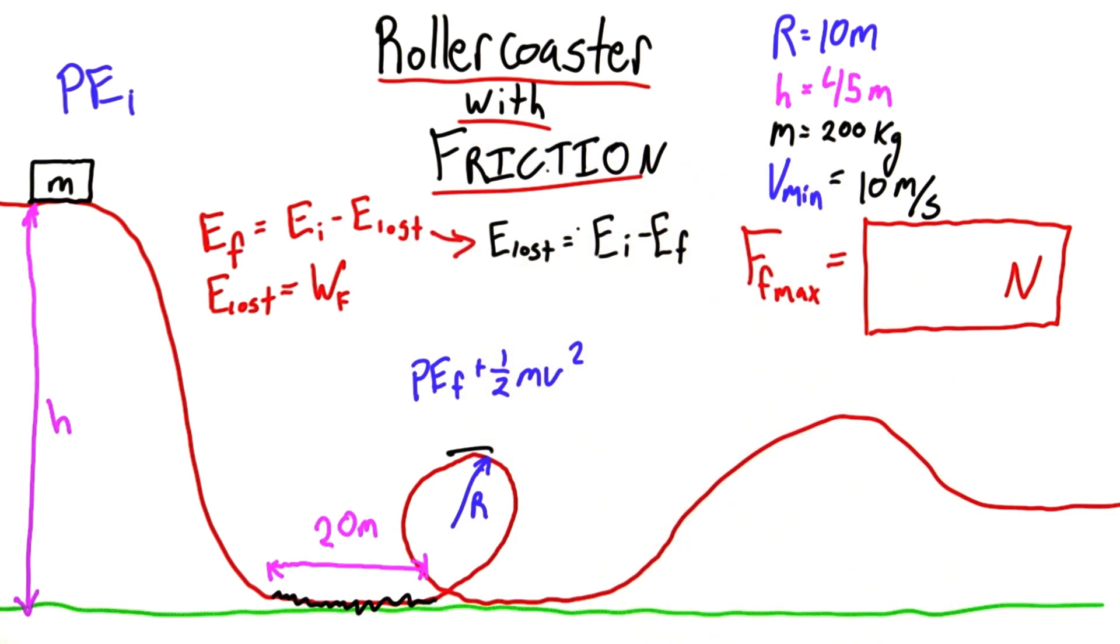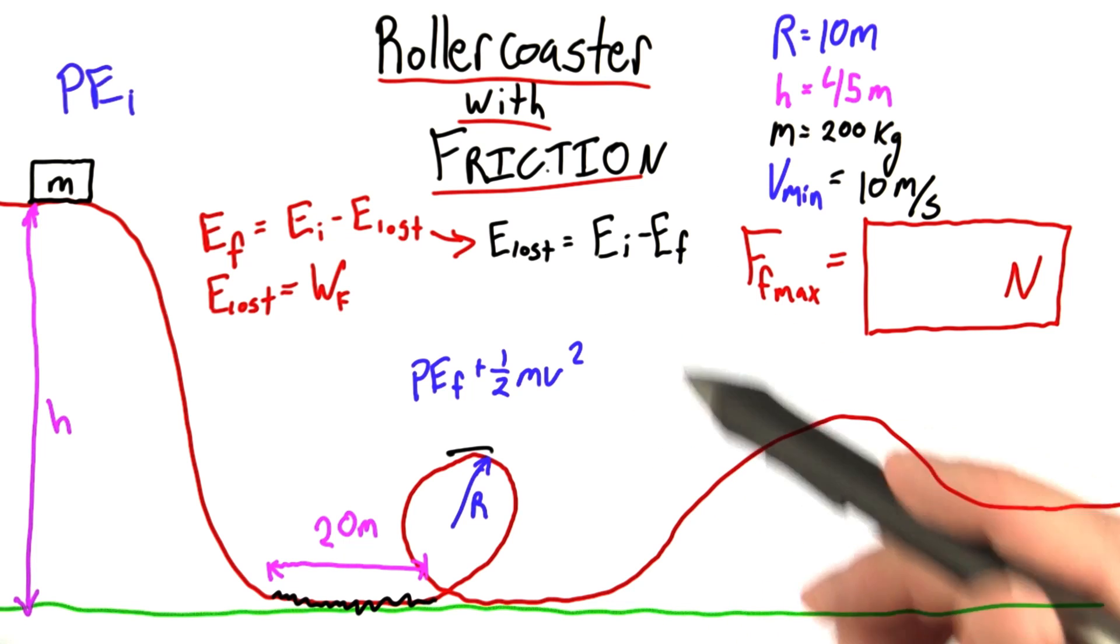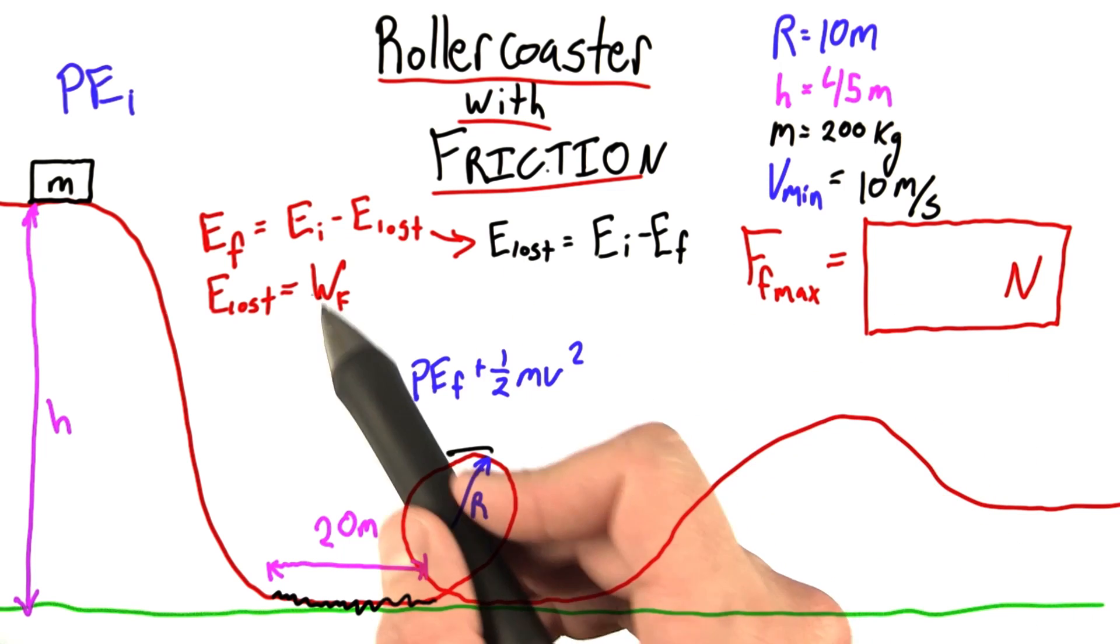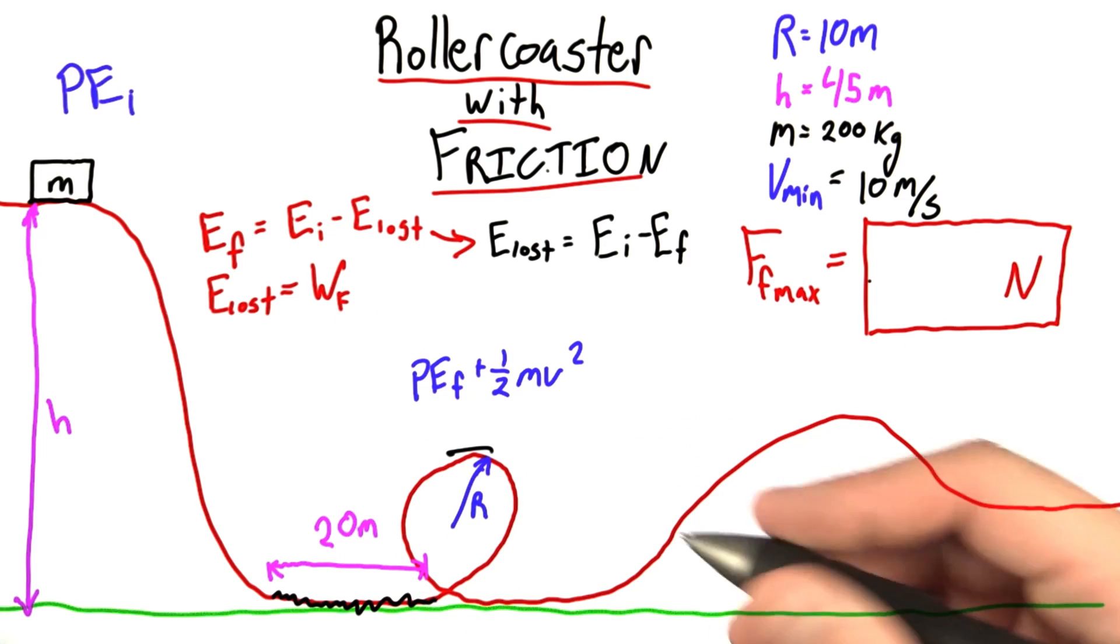So how much energy is lost? Well, I can rewrite this equation like this. Okay, fair enough. We need the initial energy and the final energy, and then we can convert that to some sort of work, and we should know the maximum force. Not bad.